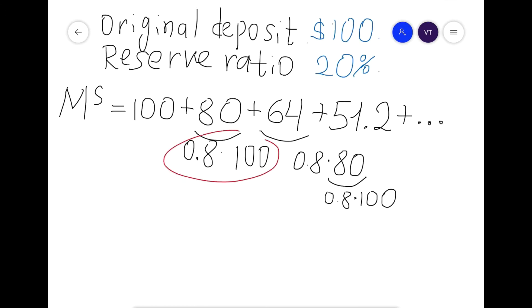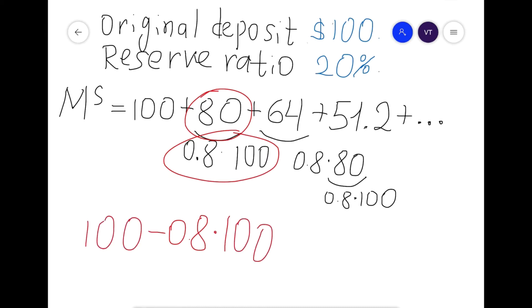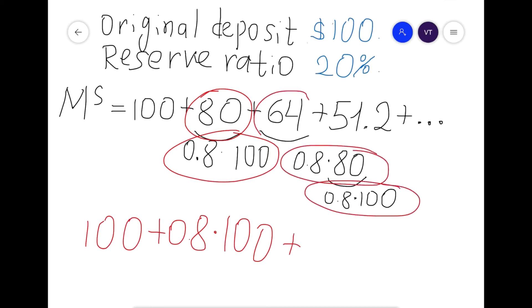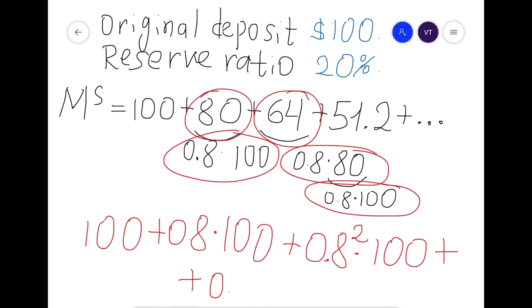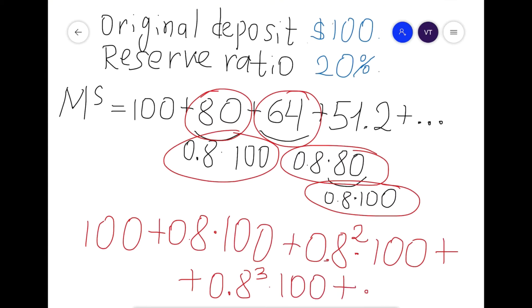If we substitute these values, we get: 0.8 × 100, then 0.8² × 100, then 0.8³ × 100, and so on. So the full sequence can be written in terms of powers of 0.8 times 100.